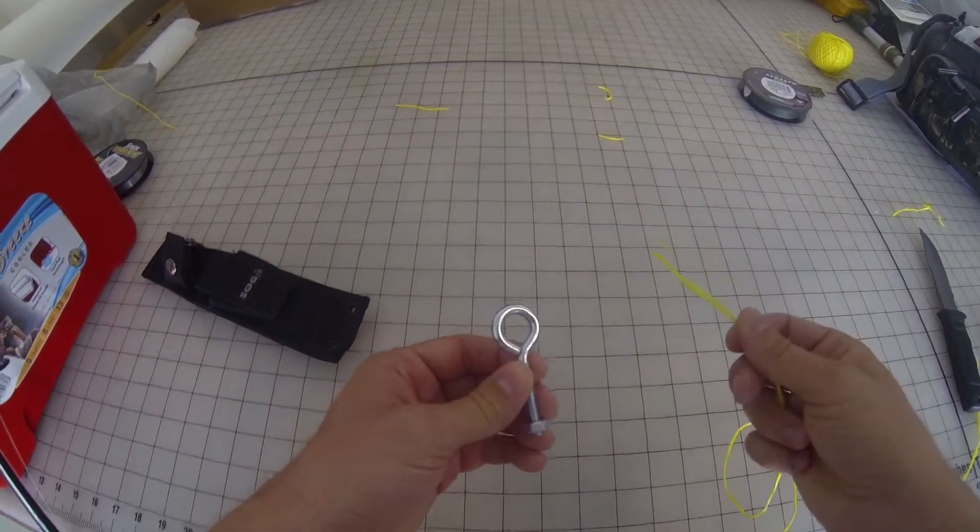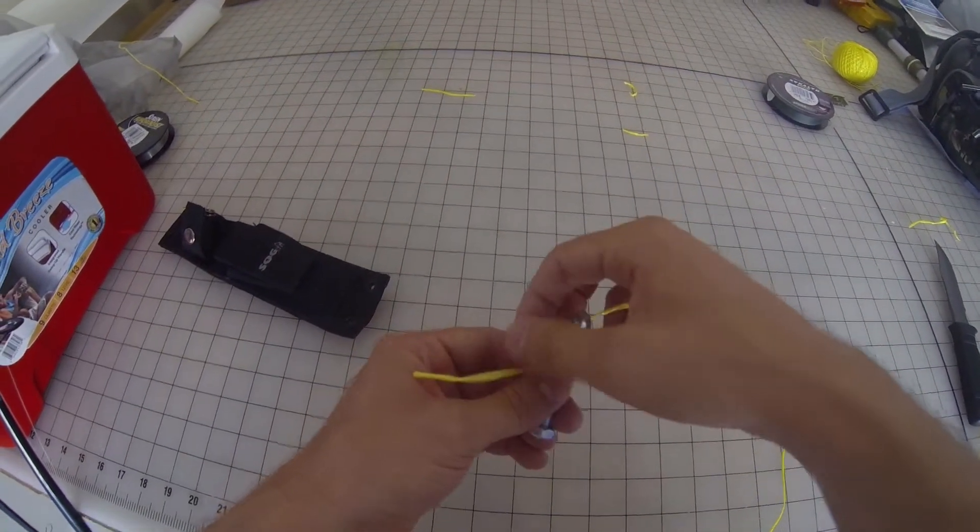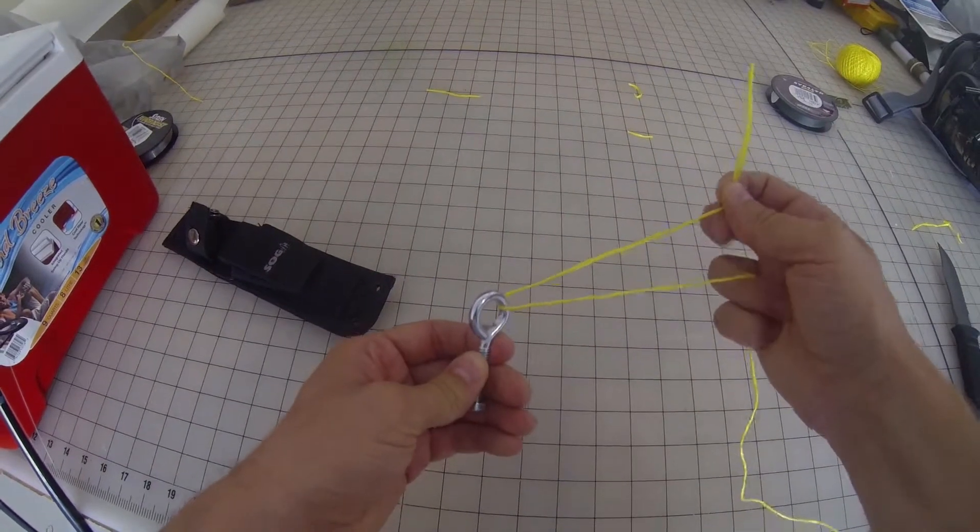I've got my hook, I've got my line. I take the line and pass it through the eye of the hook, just like the clinch knot.